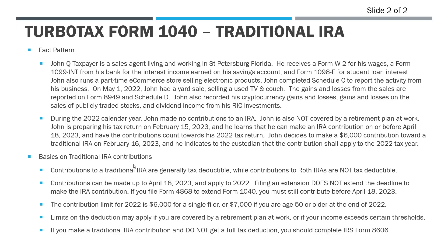With traditional IRAs, when you put the money in you generally get a tax deduction—for every dollar of retirement contribution you make, you get a $1 tax deduction on your 1040. With Roth IRAs, you don't get a tax deduction at all, so if you put money into a Roth IRA it's really not going to be reported anywhere on your tax return. Contributions can be made up until the filing deadline—for 2022 you can make it up until April 18th, 2023 and have it apply to 2022.